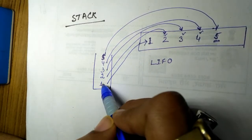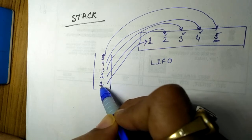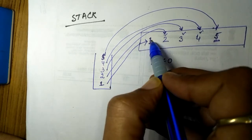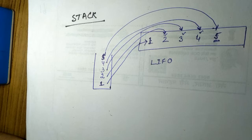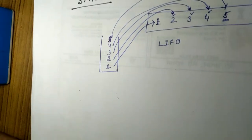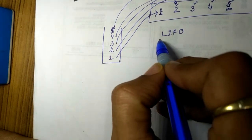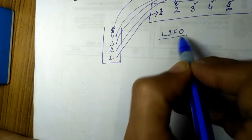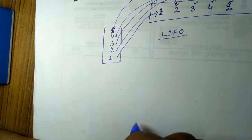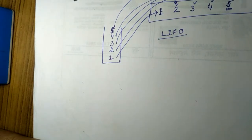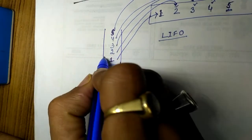The first answer book which was collected is the last one to be returned by the teacher. So you can see that stacks follow an order which is last in first out.